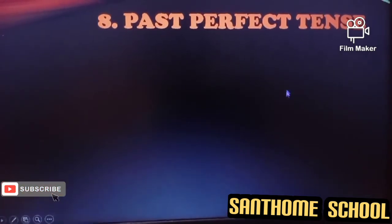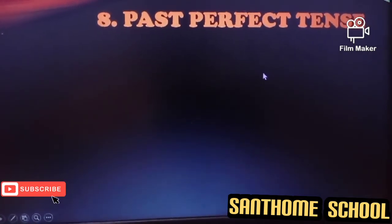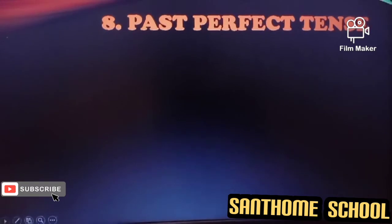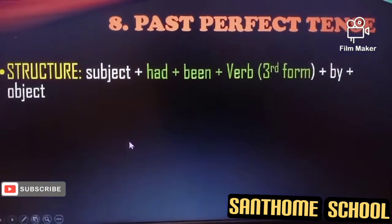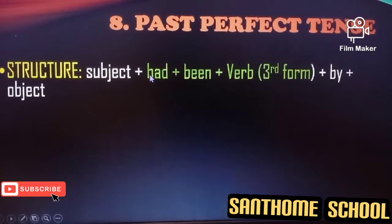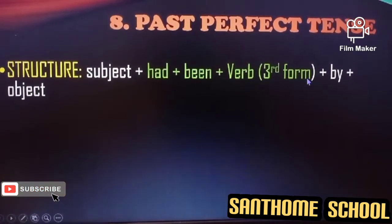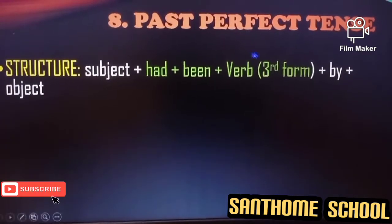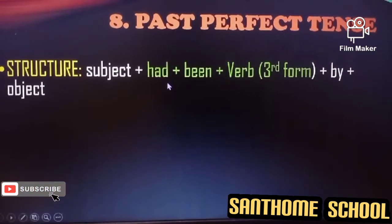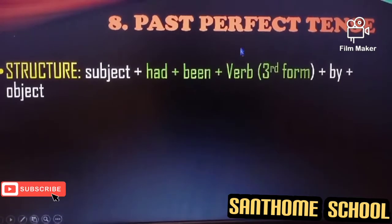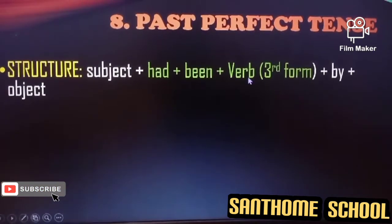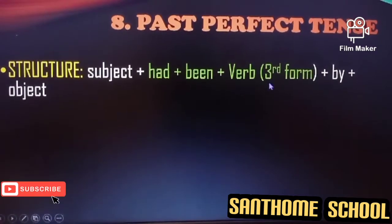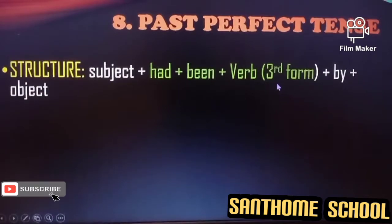Here we have the past perfect tense. We are thoroughly discussing how the perfect tenses are changed in passive voice. The structure for past perfect tense shows the change is 'had' plus 'been' plus the third form of the verb. In present perfect we used 'has' or 'have,' but in past perfect we use only 'had.' Make sure that for all the perfect tenses we use 'been,' and all passive verbs carry the past participle form of the verb.